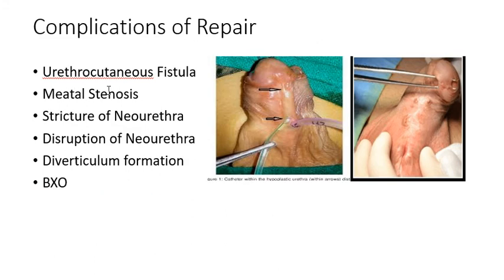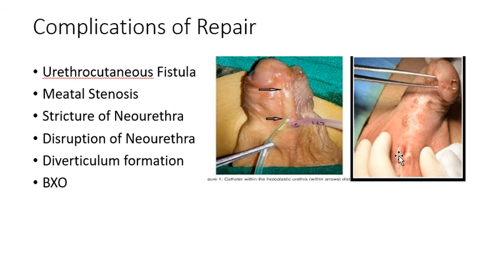Complications of repair include: urethrocutaneous fistula, meatal stenosis, stricture of neo-urethra, disruption of neo-urethra, diverticulum formation, and BXO — balanitis xerotica obliterans. In some cases the distal neo-urethra gets disrupted, and sometimes the whole neo-urethra is disrupted with urine coming from the original opening. These complications may be due to faulty technique, local infection, or tight skin leading to avascular flaps.